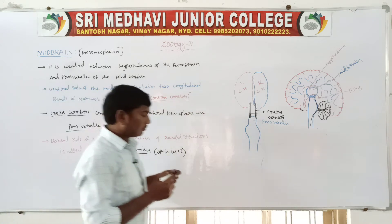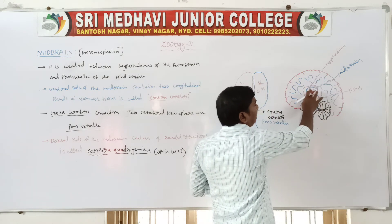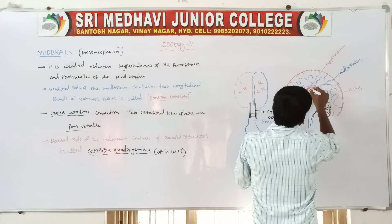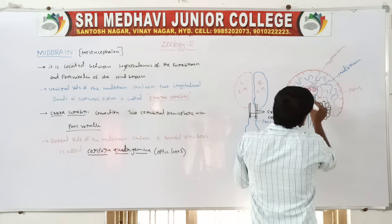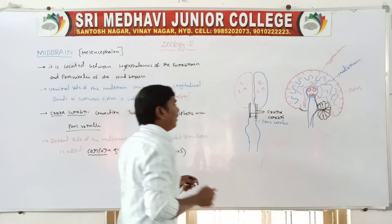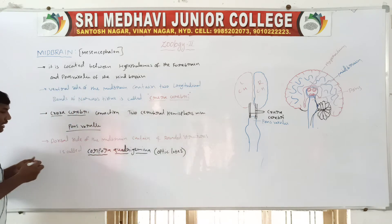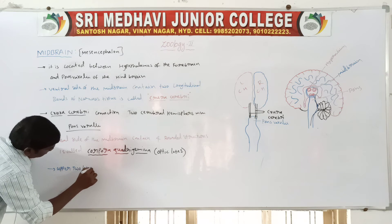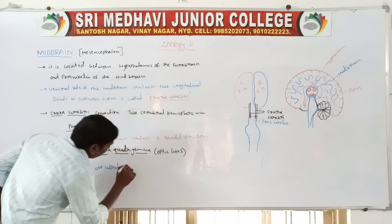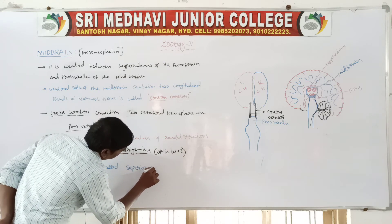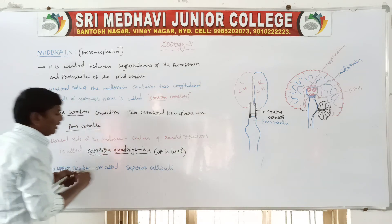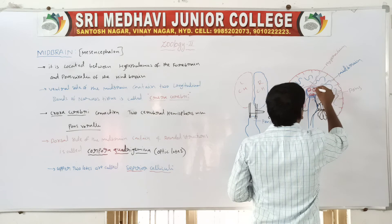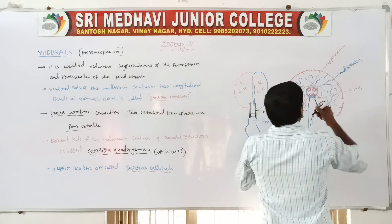So these four lobes — the midbrain contains on the dorsal side four optic lobes called as corpora quadrigemina. The upper two lobes are larger in size, and the lower two lobes are small in size. The upper two lobes are called as superior colliculi.